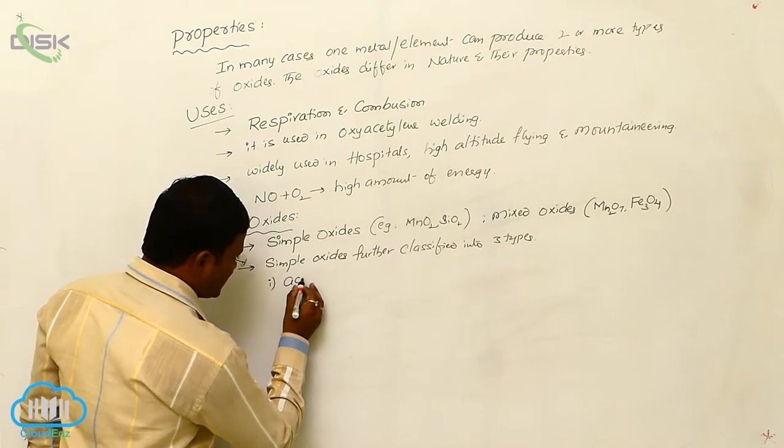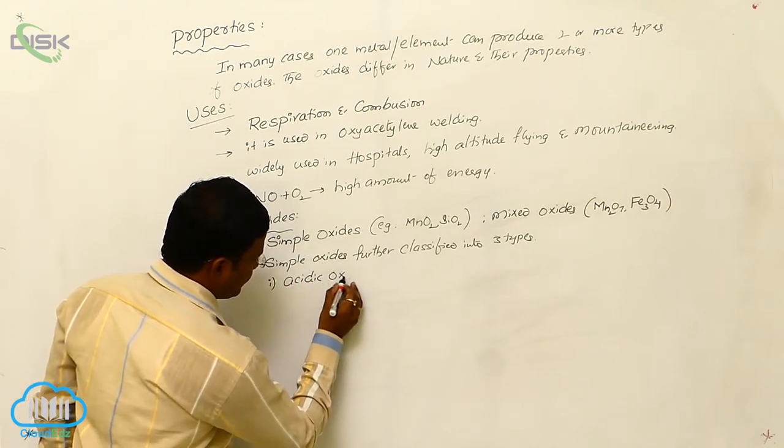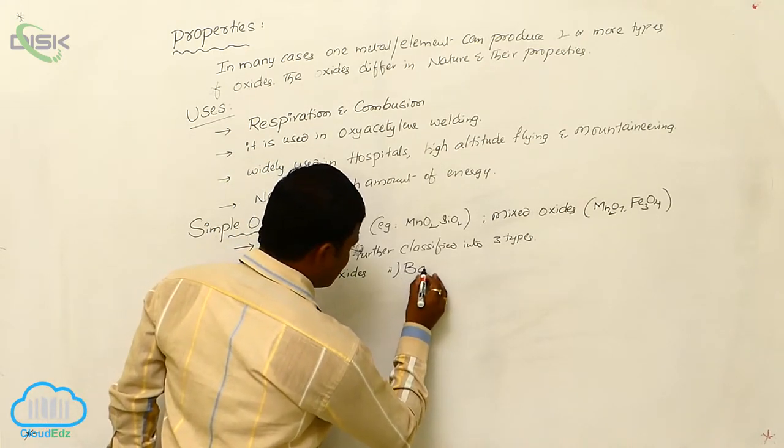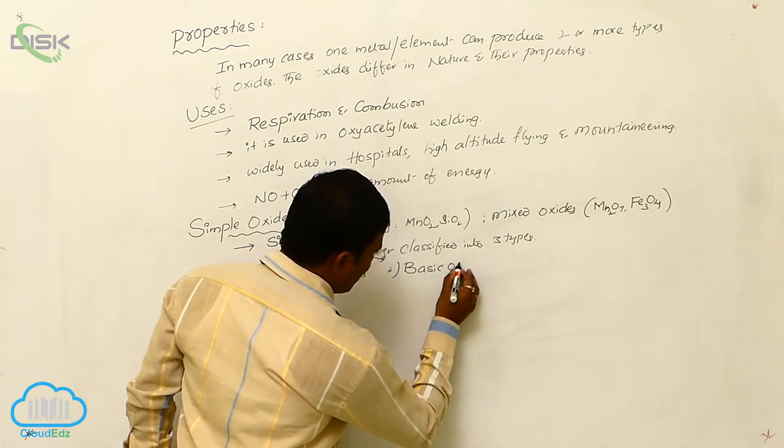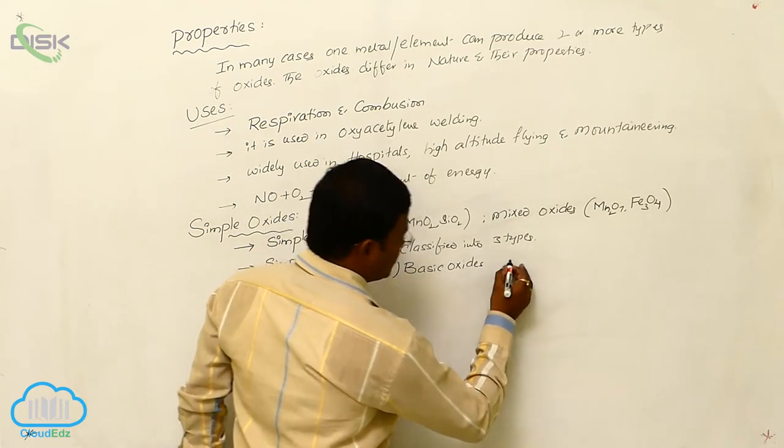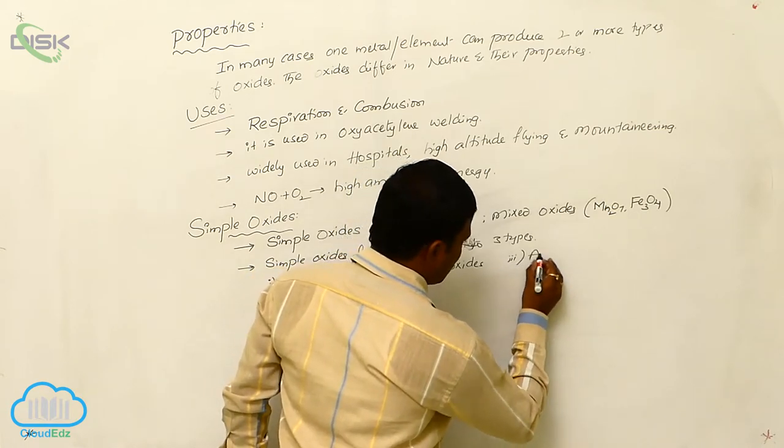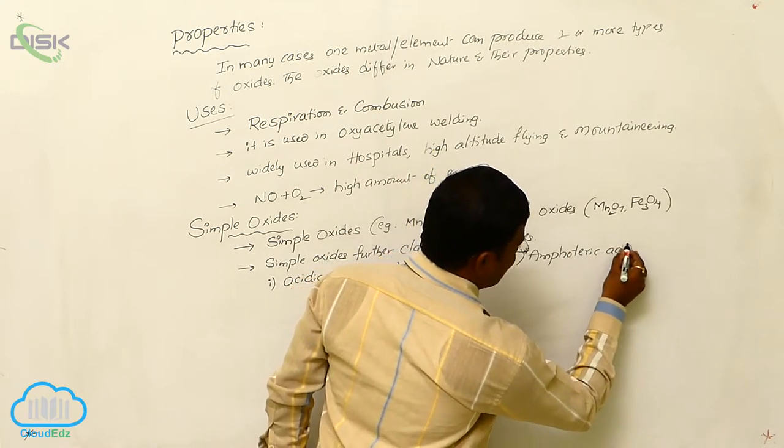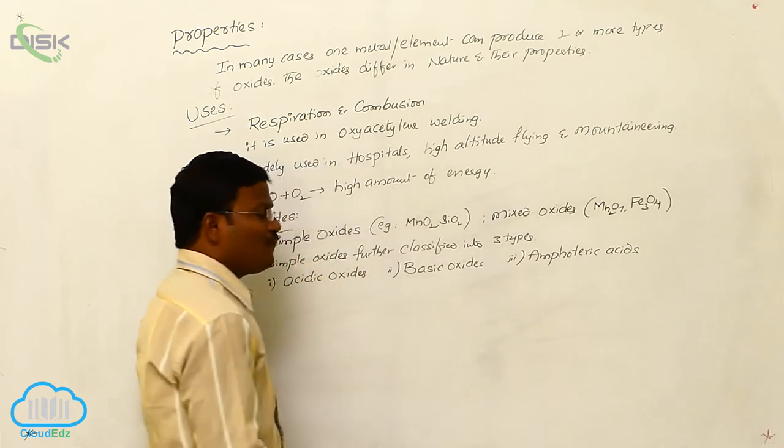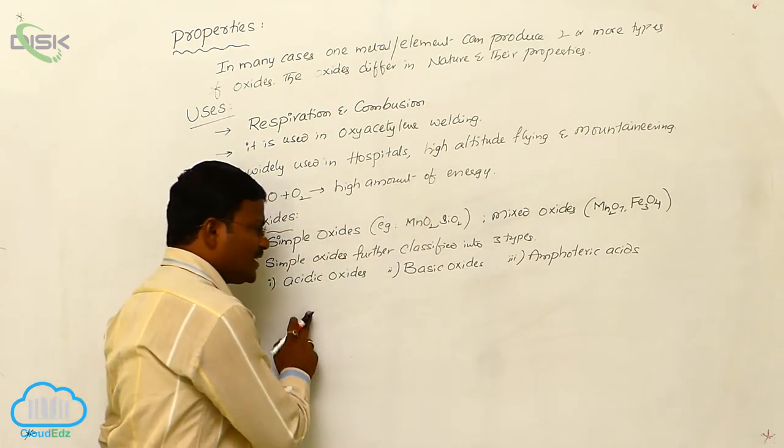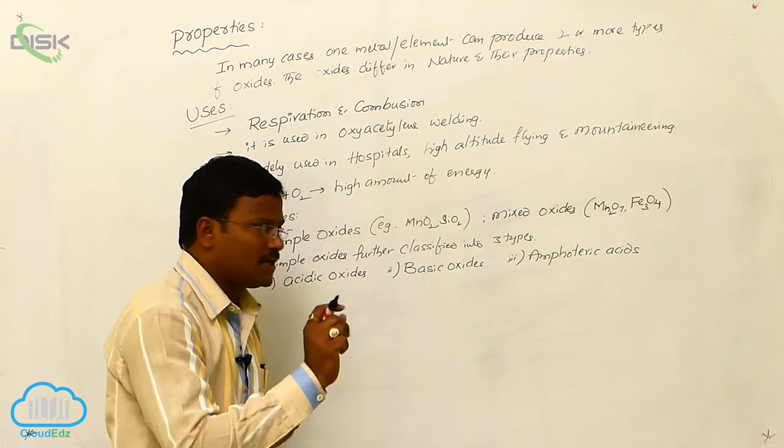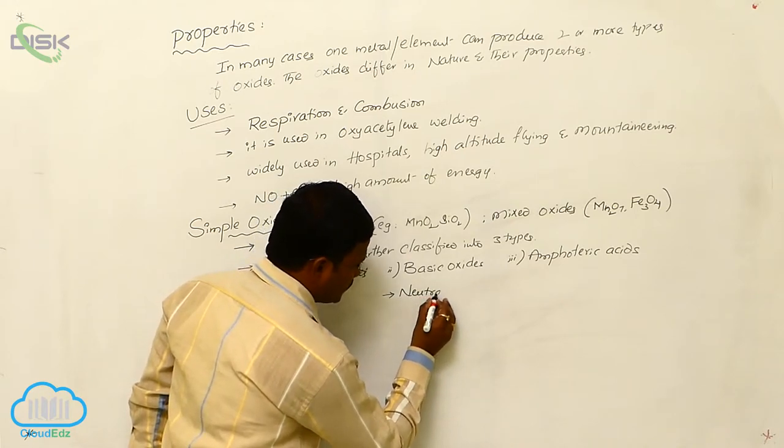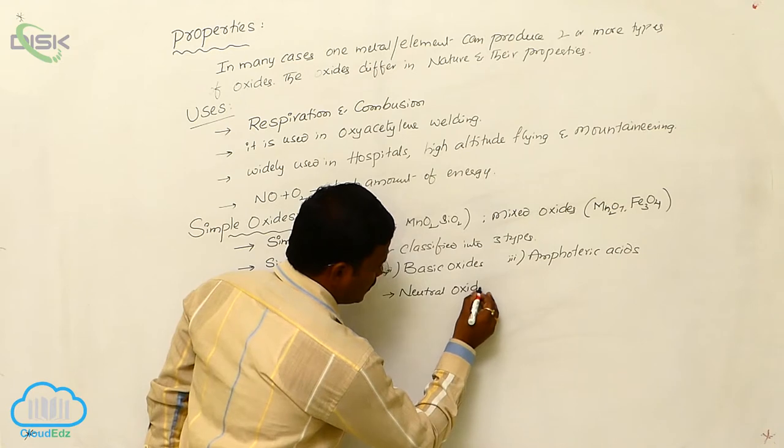Number one, acidic oxides. Second one, basic oxides. And third one, amphoteric oxides. The three types of oxides are acidic oxides, basic oxides, and amphoteric oxides. In addition to acidic, basic, amphoteric oxides, some more types of oxides are there. They are called as neutral oxides.